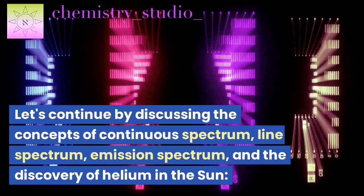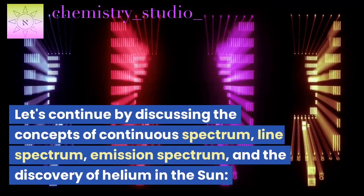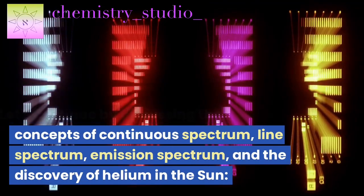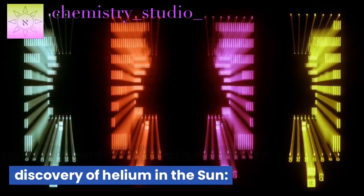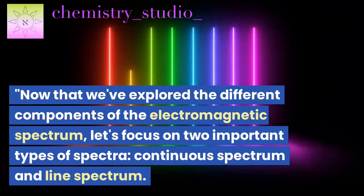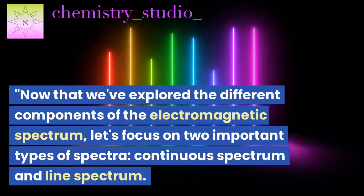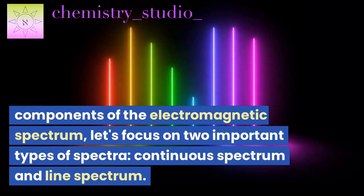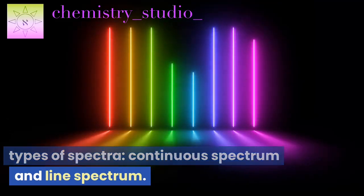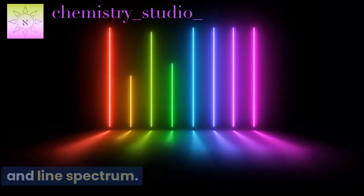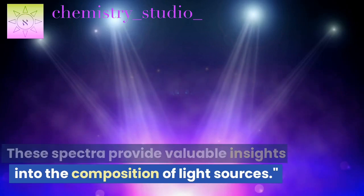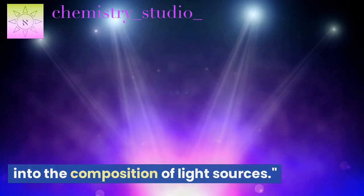Let's continue by discussing the concepts of continuous spectrum, line spectrum, emission spectrum, and the discovery of helium in the sun. Now that we've explored the different components of the electromagnetic spectrum, let's focus on two important types of spectra: continuous spectrum and line spectrum. These spectra provide valuable insights into the composition of light sources.